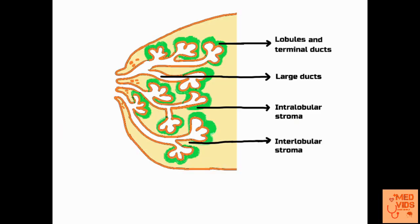Let us classify the parts of the breast under the following four headings, and the diseases associated with the breast will be discussed under these headings. In this picture I have classified the parts of the breast as four main parts. Starting from the lobules and terminal ducts, which are present in the top most part of this picture right here.